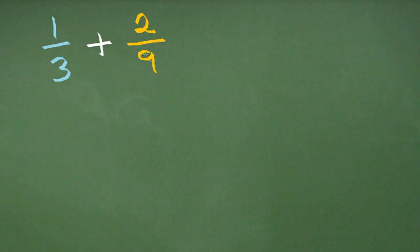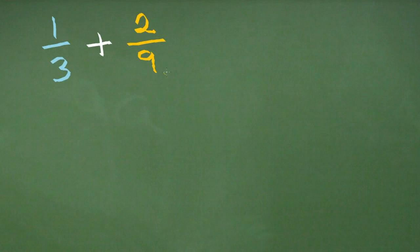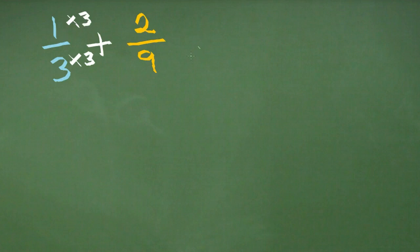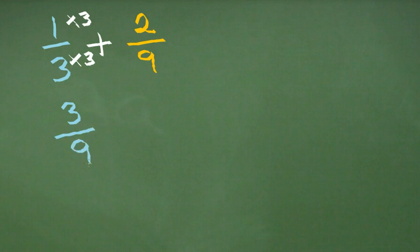Let's look at another example. In this example we have the denominators of three and nine — in one third we have three on the bottom, and in two ninths we have nine on the bottom. Again we need to make these denominators the same. The way to make three into nine is to multiply by three, and remember whatever we do to the denominator we must always do to the numerator on top — so we must also times that by three.